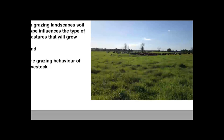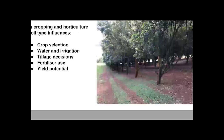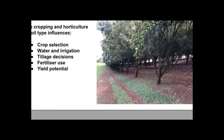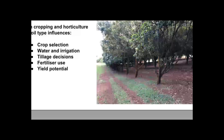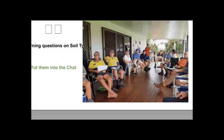In grazing and landscape management, soil type influences the type of pastures that will grow as well as livestock grazing behaviour — even the nutritional value of grasses can differ within one paddock depending on calcium levels in different soil areas. In horticulture and cropping, soil type is important because it influences what crops you grow, irrigation, tillage decisions, fertiliser use and yield potential.